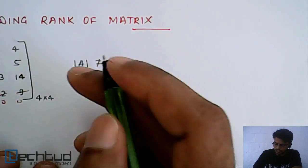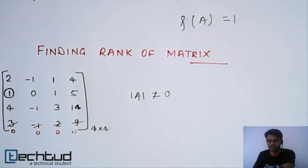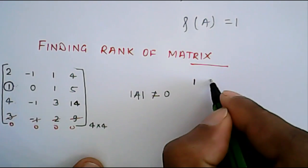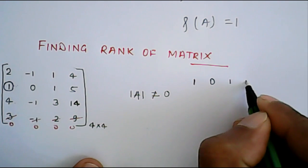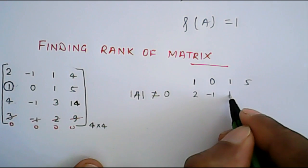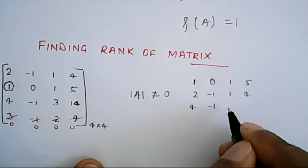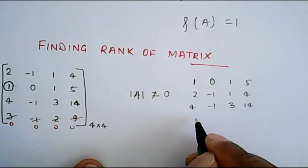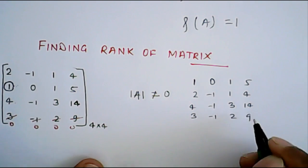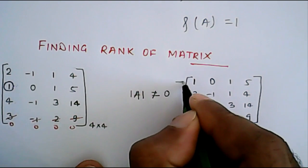Let's exchange the rows to make it easier — exchanging rows doesn't make any difference. The new matrix becomes: Row 1: 1, 0, 1, 5. Row 2: 2, −1, 1, 4. Row 3: 4, −1, 3, 14. Row 4: 3, −1, 2, 9.